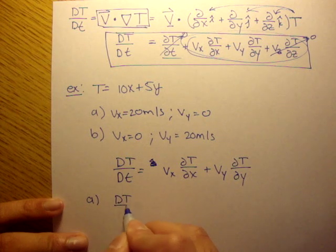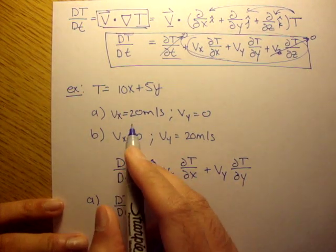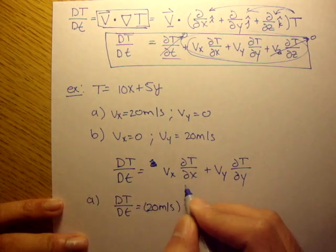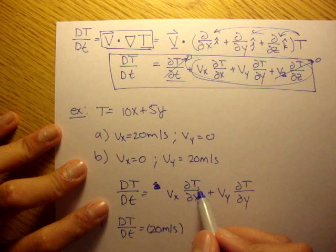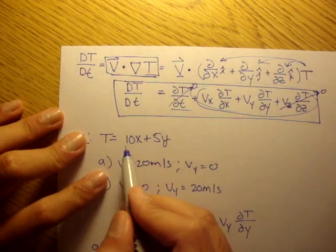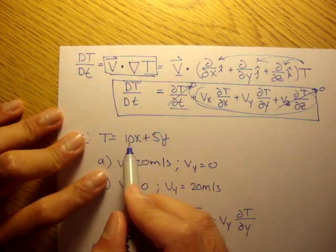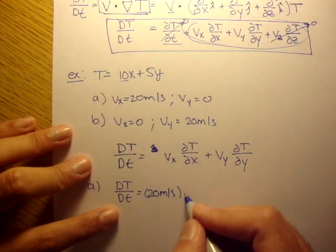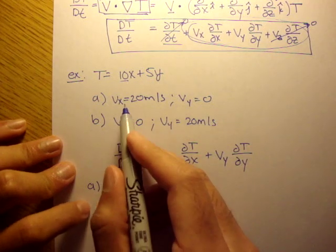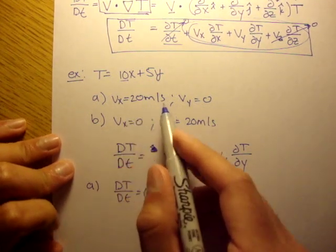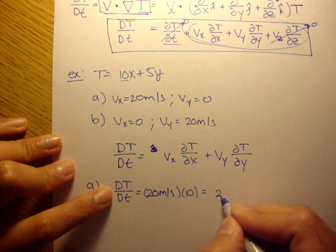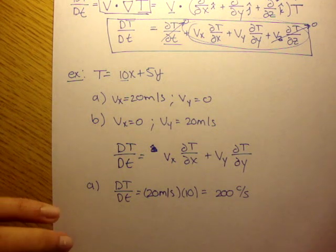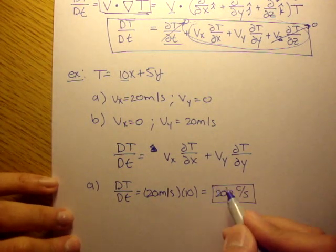So we get DT/Dt is equal to 20 meters per second, times the partial of T in respect to x. So the partial of this in respect to x only. That would be 10. Right? 10 times 10. So we get, if this is traveling horizontally, we get the material derivative is just 200 centigrade per second. All right? So that's our answer for A.